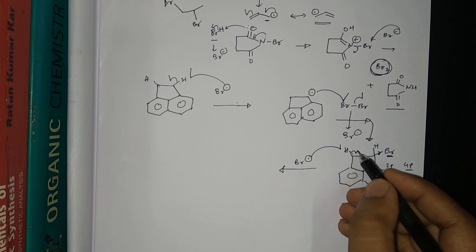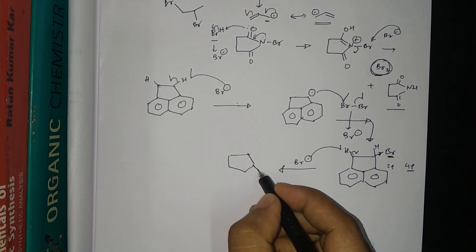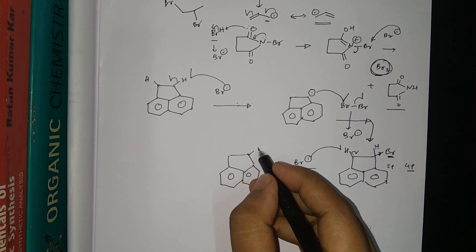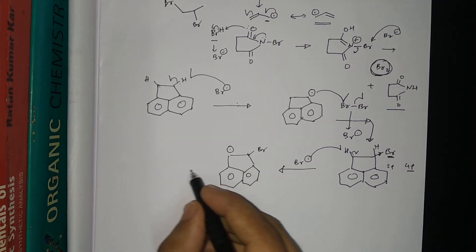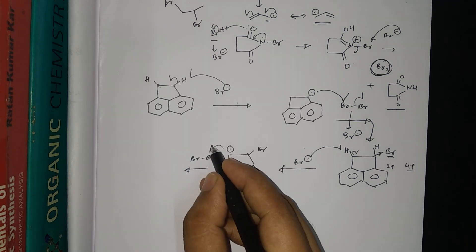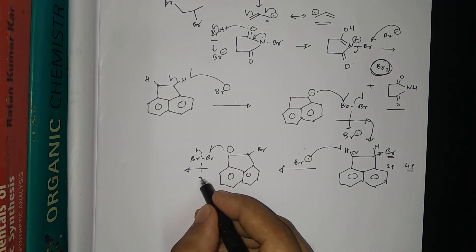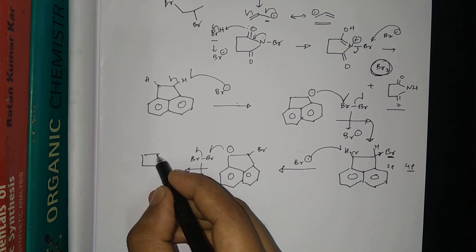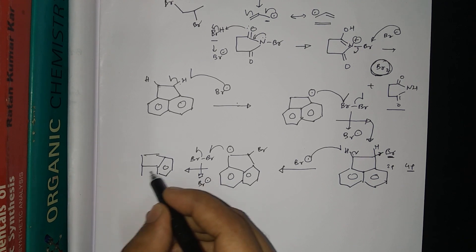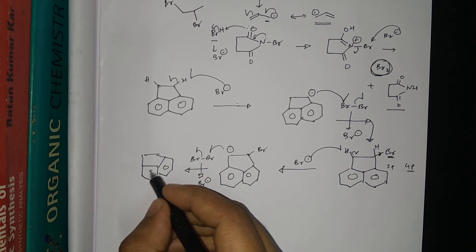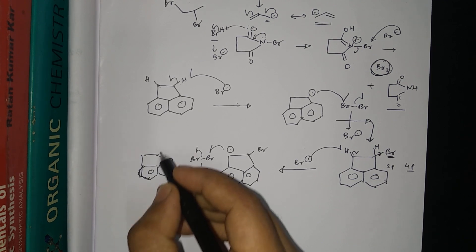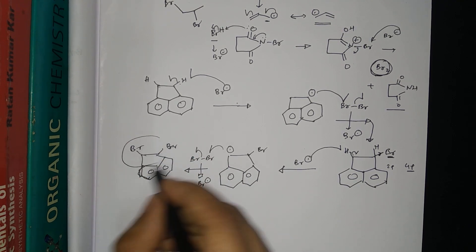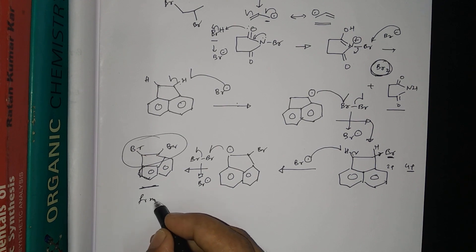The radical instead forms on the other benzylic carbon. It then reacts with the Br2 molecule to give one more Br• and forms the product with bromine on that second carbon as well.